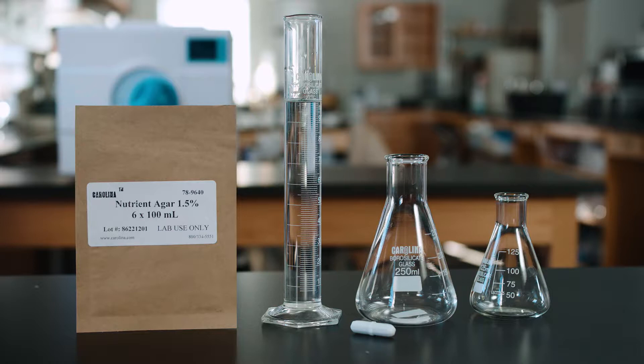If you have a bulk container of agar, you will need to weigh the recommended amount of powder using a balance. The label contains the recommended amount of powder to be used per liter. Today we will be preparing nutrient agar from Carolina's convenient pre-measured packets.